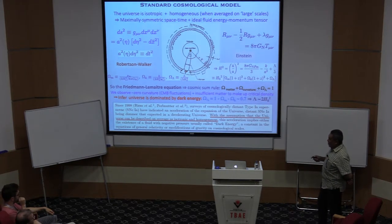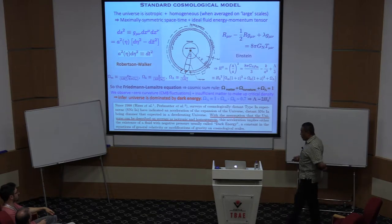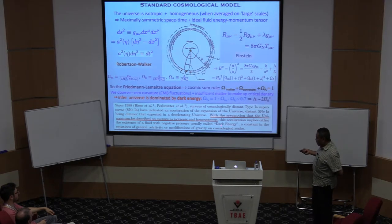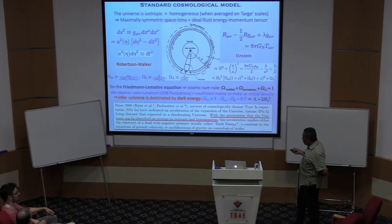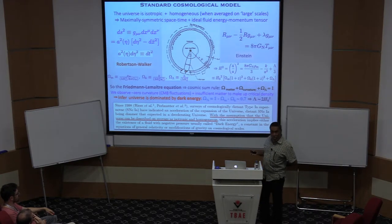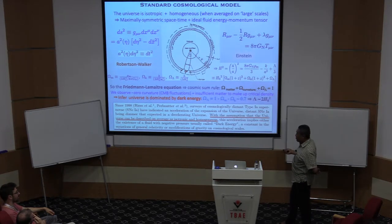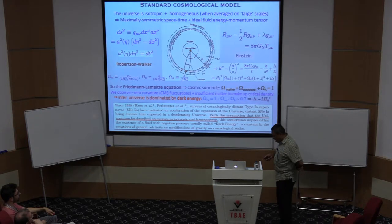Surveys of Type Ia supernovae have indicated an acceleration of the expansion. This requires the assumption that the universe is isotropic and homogeneous; then this acceleration implies a fluid with negative pressure called dark energy or a cosmological constant, or it might imply modifications of gravity. There has been a huge industry in the last 20 years to explore these possibilities, with mixed success. These explorations have delineated many aspects of gravity that are interesting; attempts to deviate from Einsteinian gravity make you realize just how tight the structure is and how difficult it is to modify gravity.